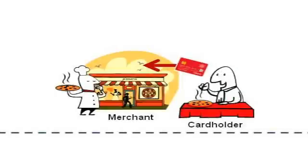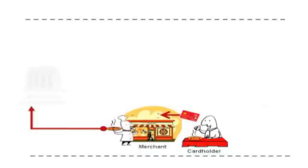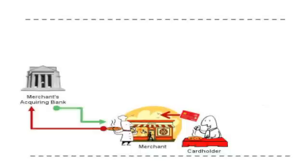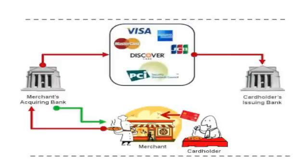A customer pays the merchant with a credit card. The merchant submits the cardholder information to the acquiring bank. The acquiring bank pays the merchant and submits information to the payment card company. The payment card company submits the information to the issuing bank, which then bills the cardholder. The cardholder pays the bill to the issuing bank.